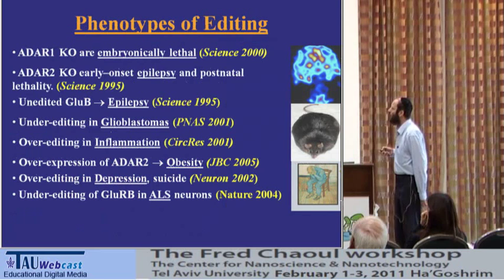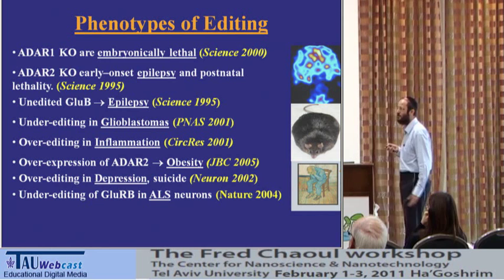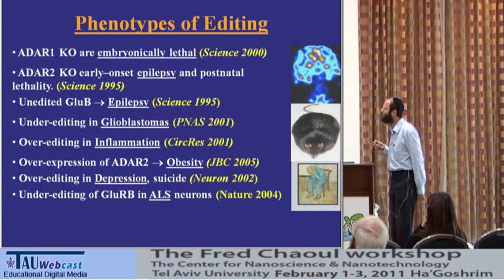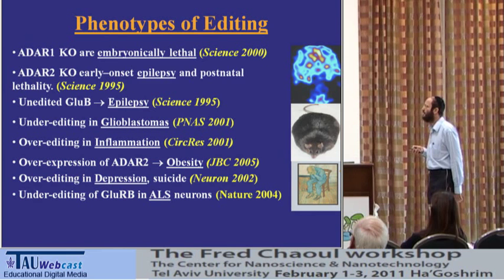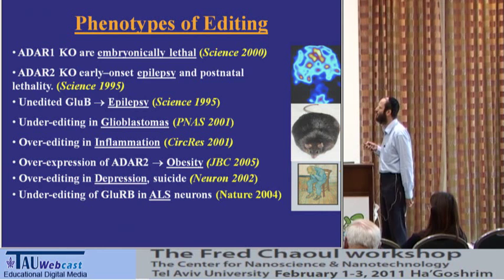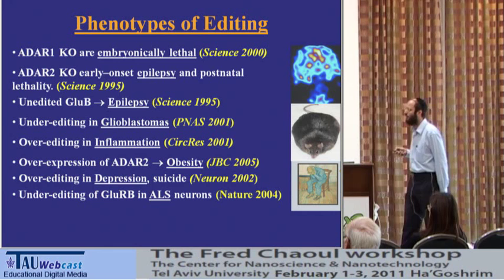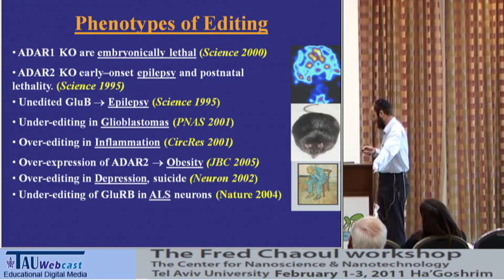Is it important? Is it relevant? When we knock out the ADAR enzymes, prohibiting the effect of editing, the animal dies embryonically. This is true for ADAR1 and ADAR2 separately. Aberrant editing is related to many different diseases: epilepsy, glioblastoma, inflammation, obesity, and others. I want to stress that many of these are in some way related to the brain or to the central nervous system — this will come up again later.